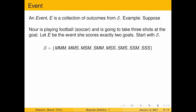Here's our sample space. S equals: she could miss-miss-miss, miss-miss-score, miss-score-miss, score-miss-miss, miss-score-score, score-miss-score, score-score-miss, or score-score-score. This is everything that can happen that we're interested in from the event of taking three shots at the goal.